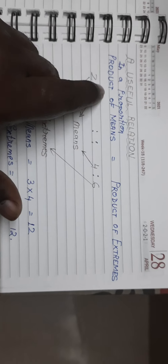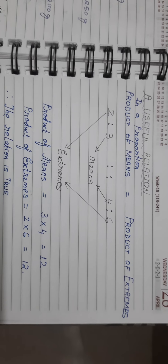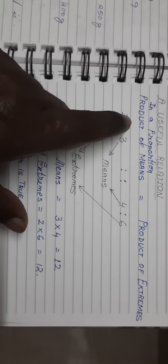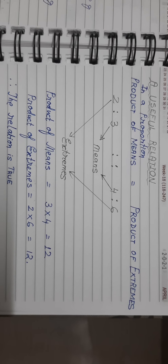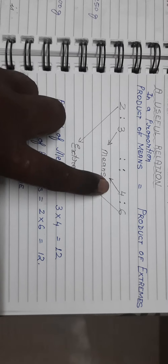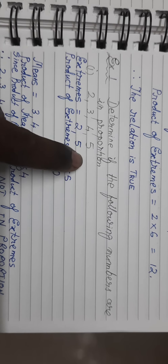This particular relation — product of means equals product of extremes — is important to remember. Suppose four numbers are given and we are asked whether they are in proportion or not: if this relation holds good, then those four numbers are regarded to be in proportion. On page 175 in your book, there is an example which says: determine if the following numbers are in proportion. The numbers given are 2, 3, 4, and 5.